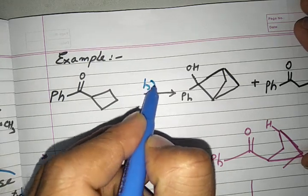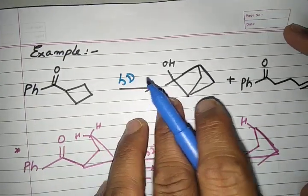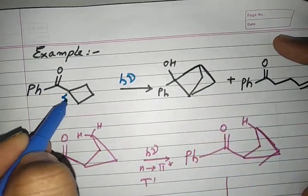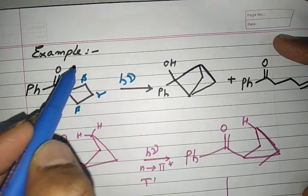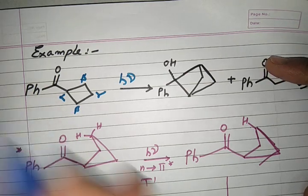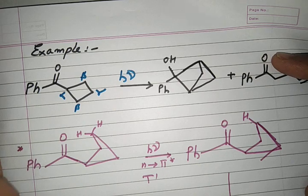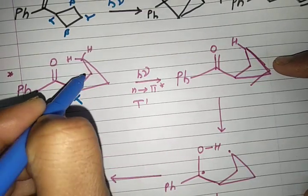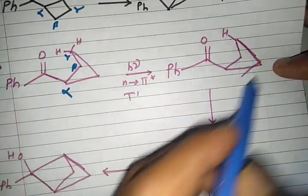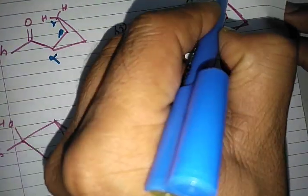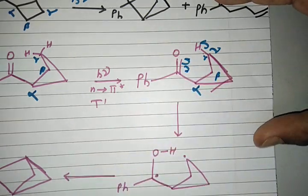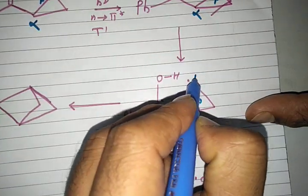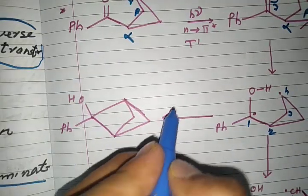Let us look at a final example. Taking a ketone compound and subjecting it to UV radiation, two products are possible. Identifying the alpha, beta, and gamma carbons — the gamma carbon approaches the carbonyl oxygen, and gamma hydrogen migrates through the same mechanism. After activation, the C–H bond breaks, forming a 1,4-diradical. This diradical then undergoes cyclization to form a cyclobutanol ring.